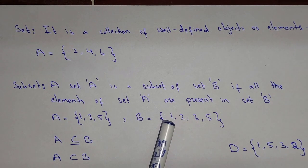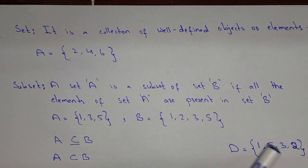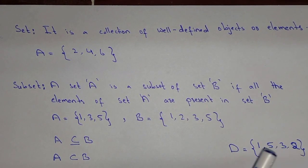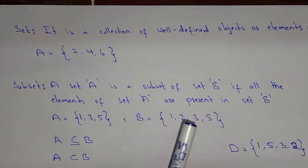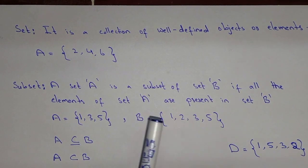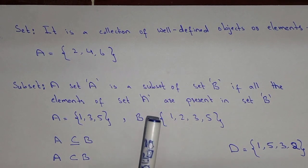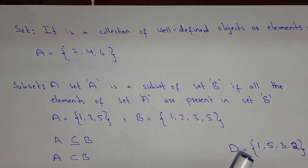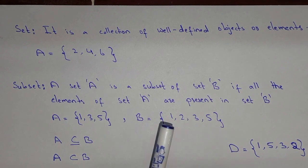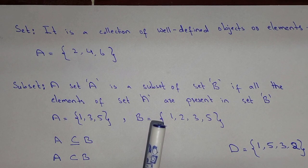We can also say that B is the improper subset of set D. All the elements are equal — we are not concerned about the arrangement of the elements, but the elements are the same and the number of elements is the same. So B is the improper subset of set D, and D is the improper subset of set B. I hope you understand. Thank you for watching this video.